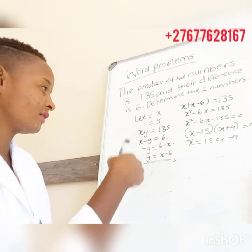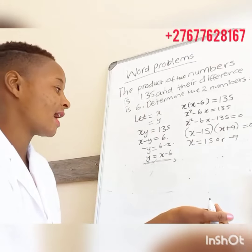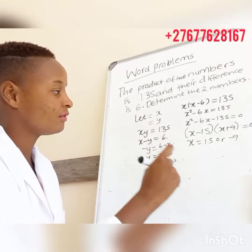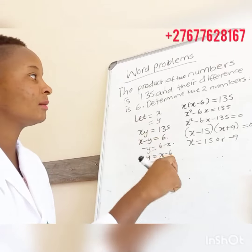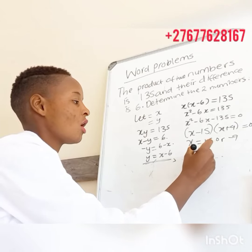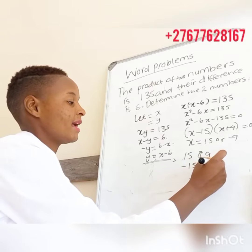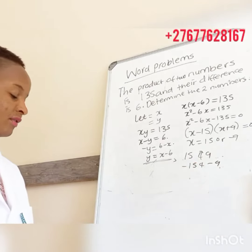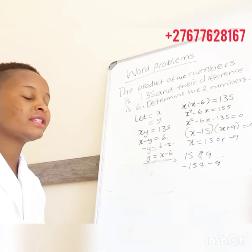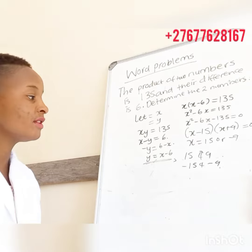The other side gets positive 15 and the other negative 9. So in this particular question, the two numbers can be 15 and 9, or negative 15 and negative 9. Those are the two sets of numbers.